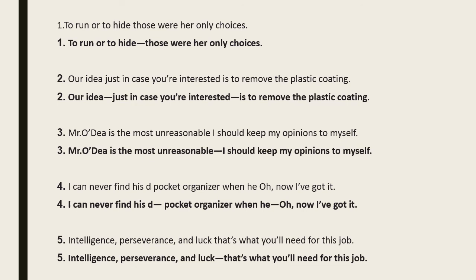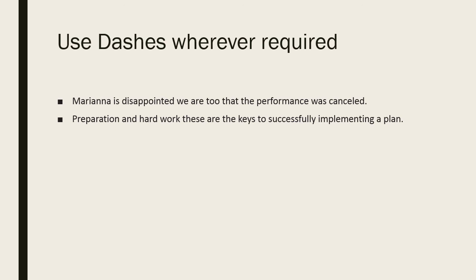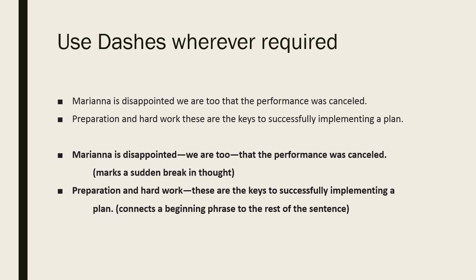'Intelligence, perseverance, and luck — that's what you will need for this job.' The three introductory words are connected to the rest of the sentence by a dash. 'Mariana is disappointed — we are too — that the performance was cancelled.' The inserted comment 'we are too' is set off by dashes. 'Preparation and hard work — these are the keys to successfully implementing a plan.' A beginning phrase connected to the rest of the sentence using a dash.